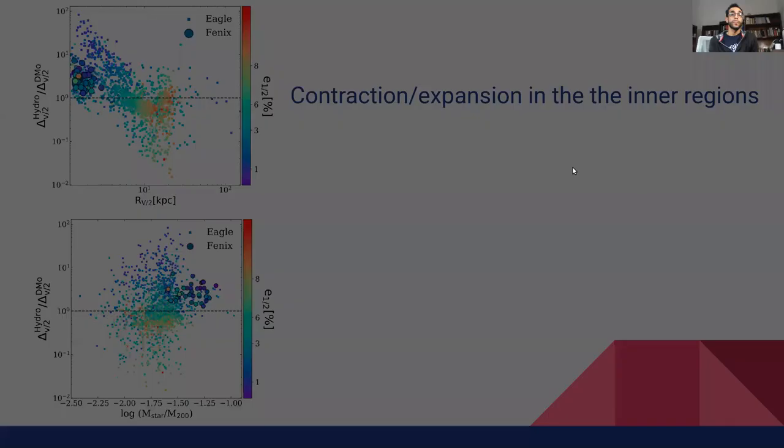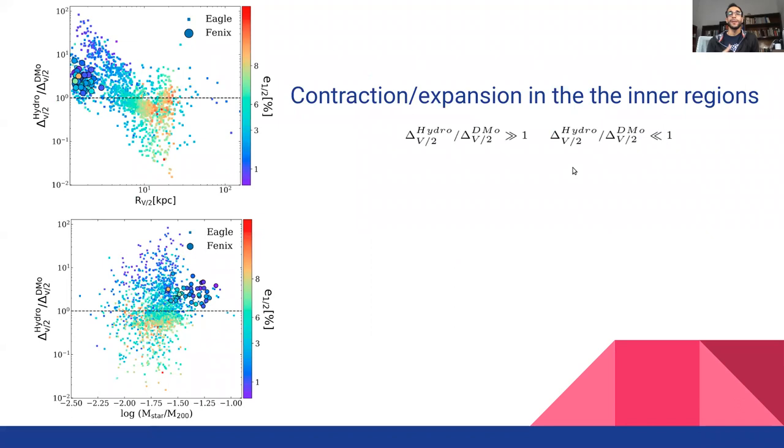So now with the next slide, we are showing in this figure the halo mass contraction and expansion as a function of the halfway up radius in the top panel and versus the stellar to halo mass ratio in the bottom panel. Again, the points are colored by the galaxy compactness C factor.